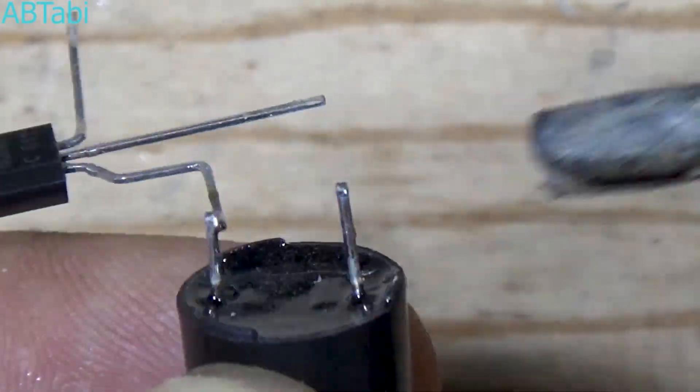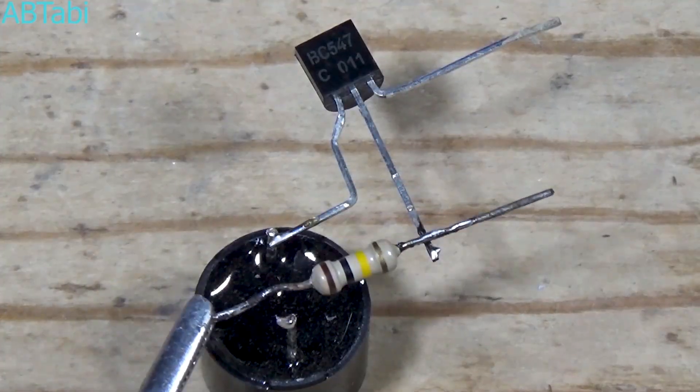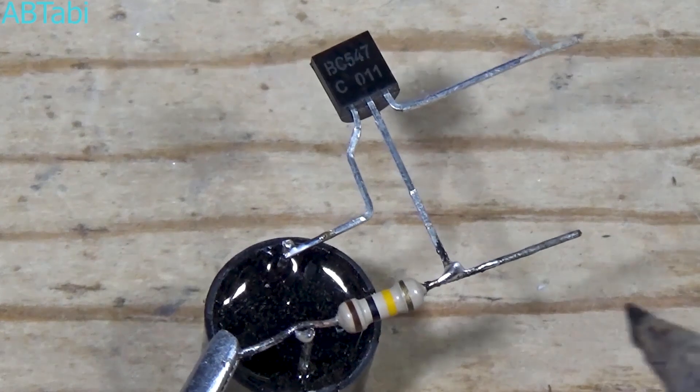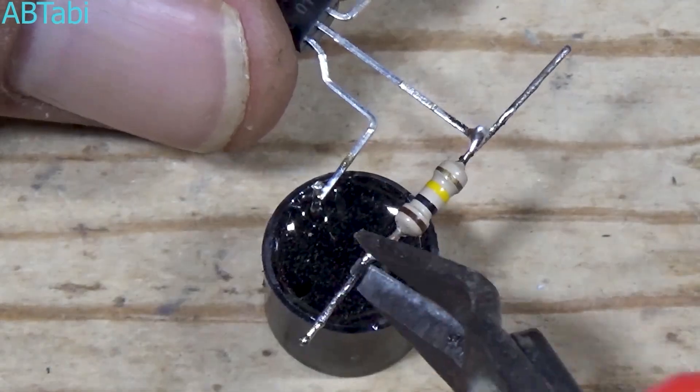Connect the collector pin of the transistor to the negative pin of the buzzer. Connect the 100k ohm resistor from the base pin of the transistor to the positive pin of the buzzer.